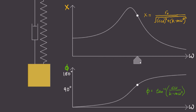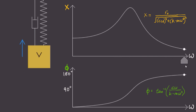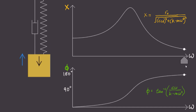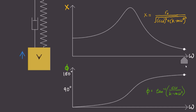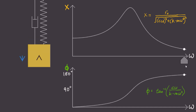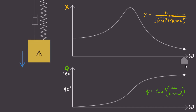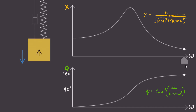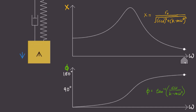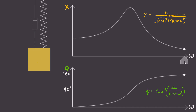But now, let's excite at a very high frequency. Notice, the force vector and the displacement vector are totally different now. They're 180 degrees out of phase. Why would this happen? Likewise, let's excite at the natural frequency, which occurs when phi is exactly equal to 90 degrees.